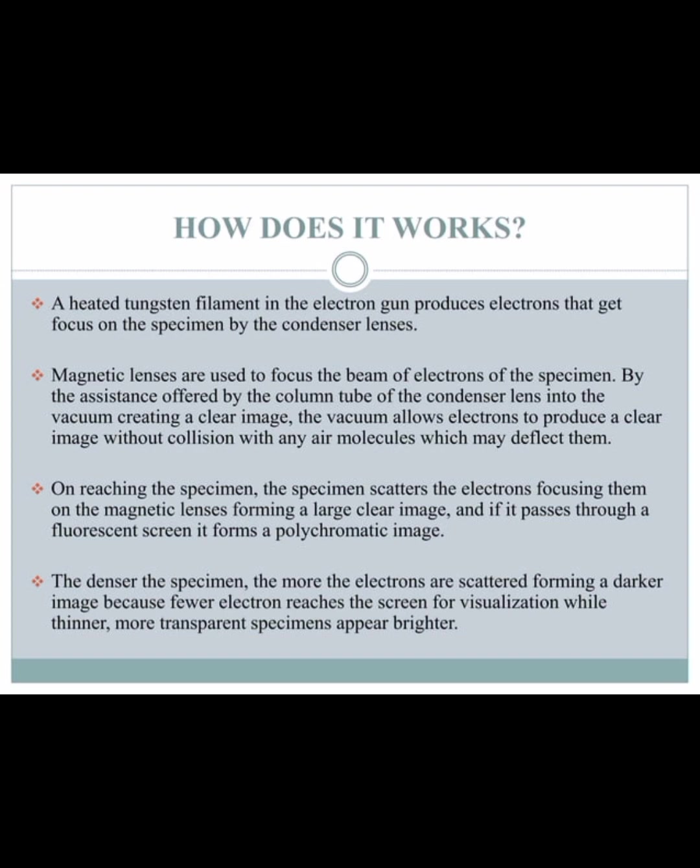Air molecules may deflect the electrons. On reaching the specimen, the specimen scatters the electrons, focusing them through the magnetic lenses and forming a larger, clear image. If it passes through a fluorescent screen, it forms an image. The denser the specimen, the more electrons are scattered, forming a darker image because fewer electrons reach the screen.